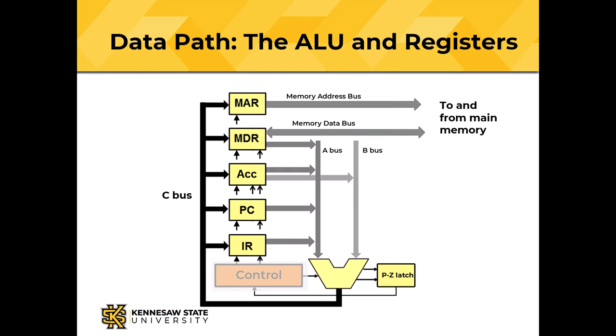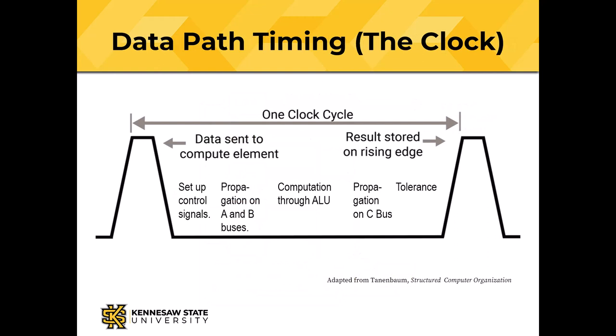The data path of a computer is the ALU, the registers, and the buses that connect them; the control unit isn't part of the data path. Let's look at the clock cycle. On the falling edge of the clock, the control unit sets up the control signals. Time passes and data propagate along the A and B buses. The longest part of the clock cycle is computation through the arithmetic logic unit — it has a lot of gates, so a fairly large gate delay. The results from the ALU propagate along the C bus. We add a little tolerance time for variation in electronic components, and on the rising edge of the clock, we store the result.